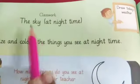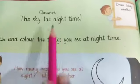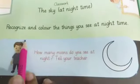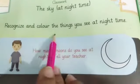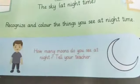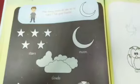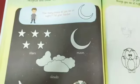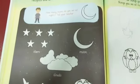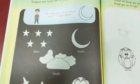Now open page number 57 — the sky at nighttime. Recognize and color the things you see at nighttime. Which things do you see at nighttime?